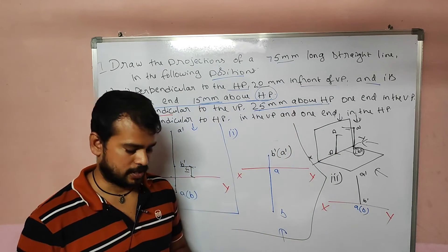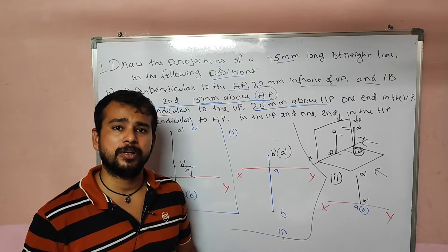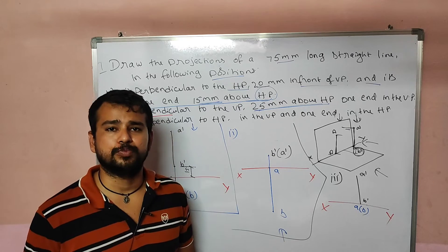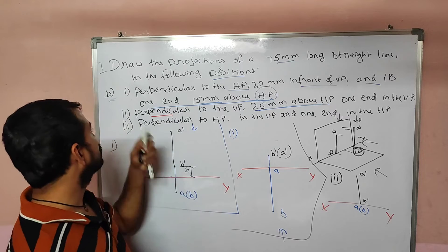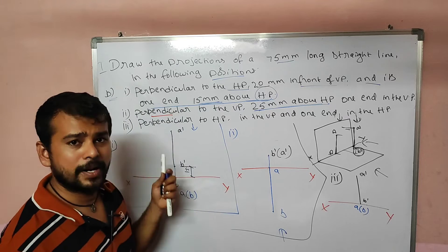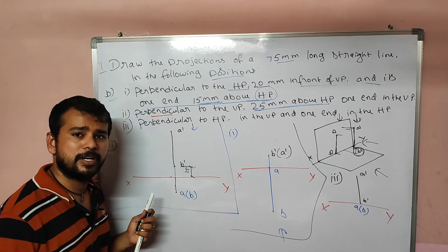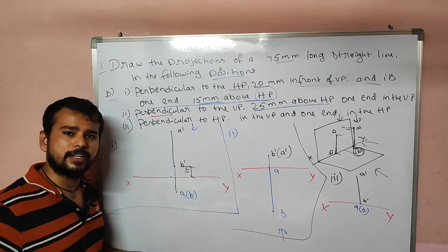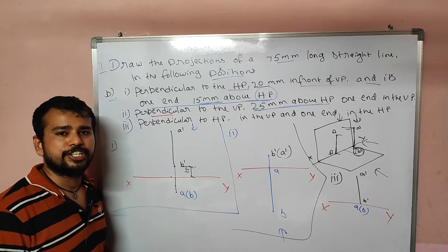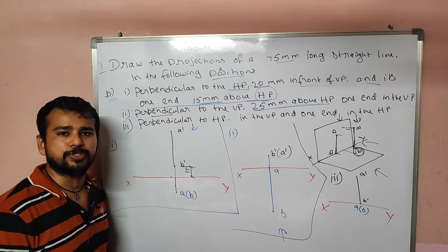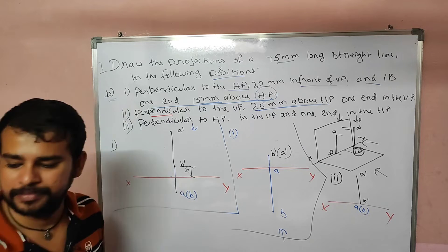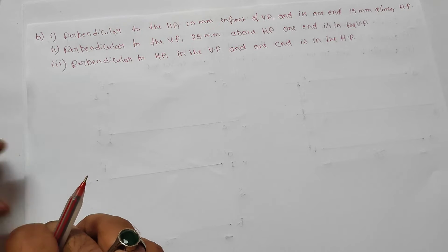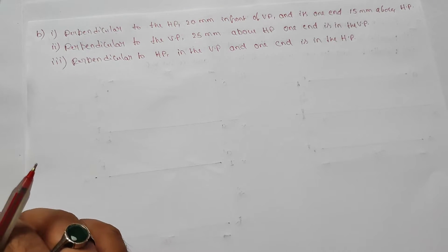If you look at the problems, you can see the drawing sheet. If you have a C, you can see 1A and 1B. You can see 1C. You can see the sheet. Now let's look at problem number B — perpendicular to HP.